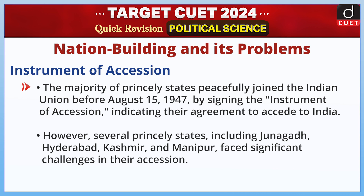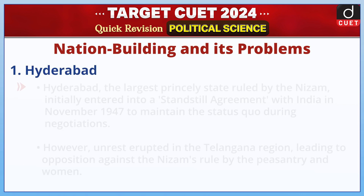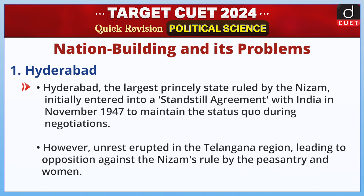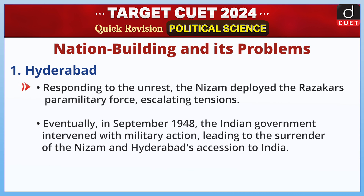Hyderabad, the largest princely state ruled by the Nizam, initially entered into a standstill agreement with India in November 1947 to maintain the status quo during negotiations. However, unrest erupted in the Telangana region, leading to opposition against the Nizam's rule. Responding to the unrest, the Nizam deployed the Razakars paramilitary force, escalating tensions. Eventually, in September 1948, the Indian government intervened with military action, leading to the surrender of the Nizam and Hyderabad's accession to India.